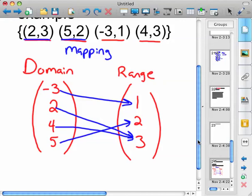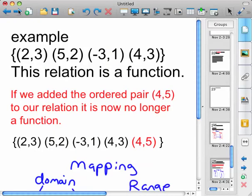So this is a function. Every member of the domain matches to exactly one member of the range. Where we run into problems is if we would add the ordered pair four, five to our relation, it is now no longer a function. And here's why.